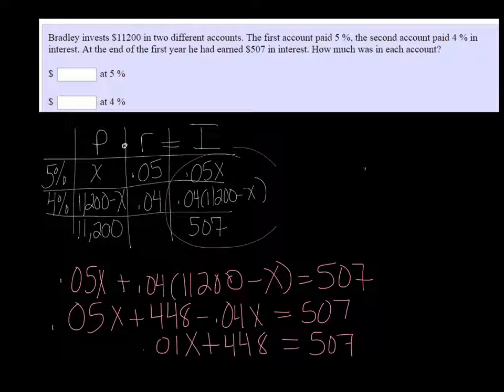So I have 0.01X equals 59. And divide that by 0.01, and we get 5,900.